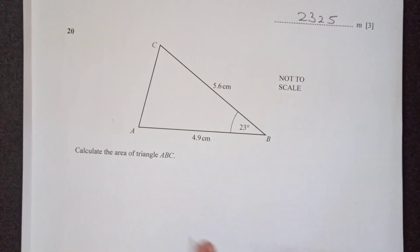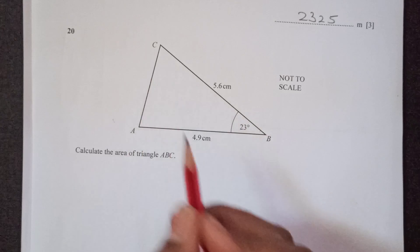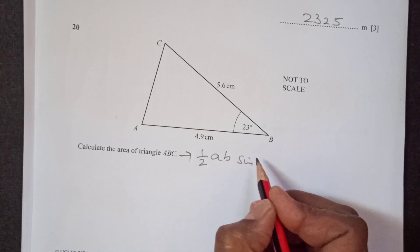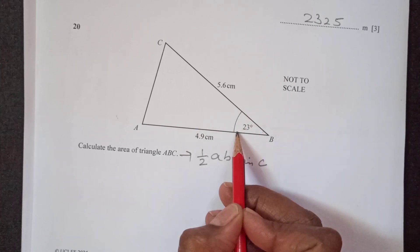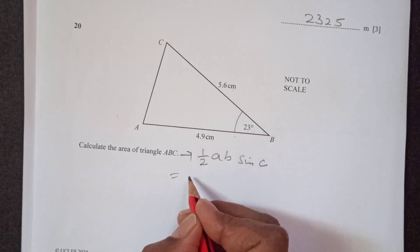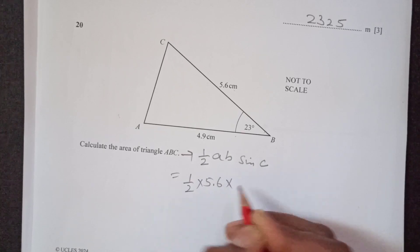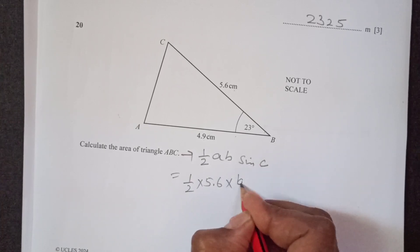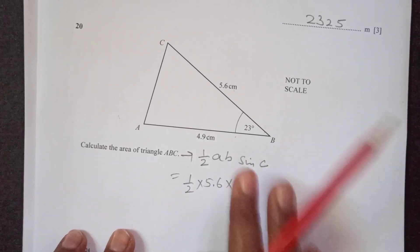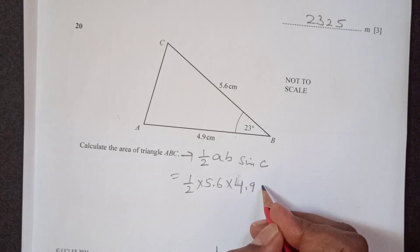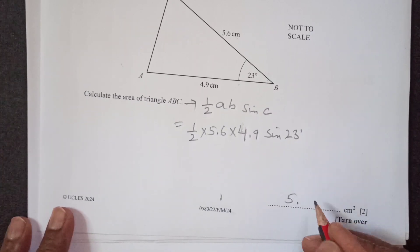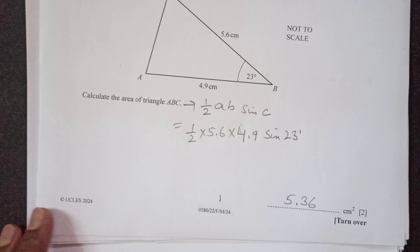Now next question we have here, calculate the area of the triangle ABC. So area of triangle ABC, we have formula half AB sine C. So we have here this angle 23, sides you are going to take these two and then angle included is here. So this is going to be half times 5.6 times 4.9 sine 23 degrees. So just plug in all the values. So final answer comes here, 5.36 centimeters squared.